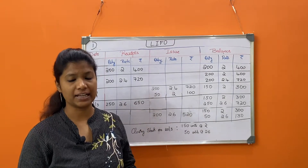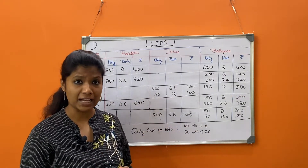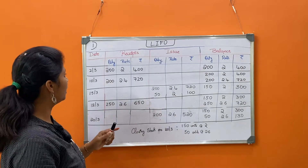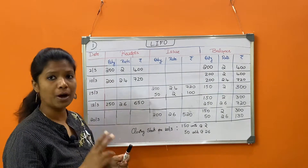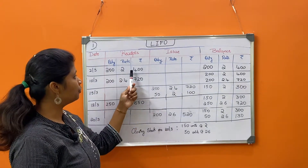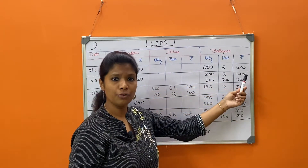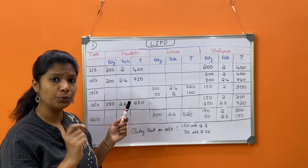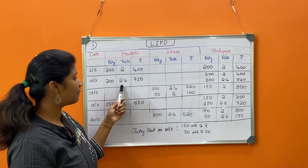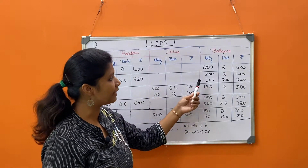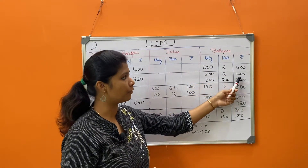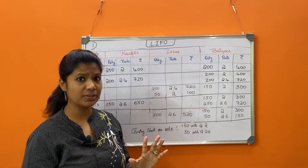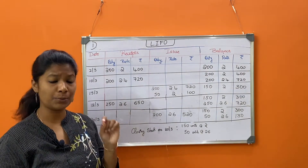Now we'll solve the same question under LIFO method — last in first out — meaning the last batch of goods will be issued first. 2nd March: received 200 units at rate 2, value 400; balance 200 at rate 2, value 400. 10th March: received 200 units at rate 2.4, value 720; carry forward previous balance 200 at rate 2, value 400, and add today's 200 at rate 2.4, value 720.